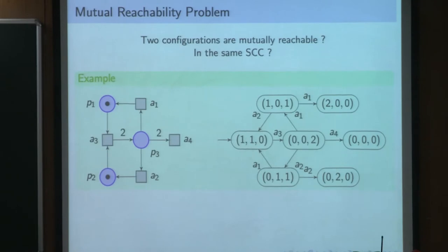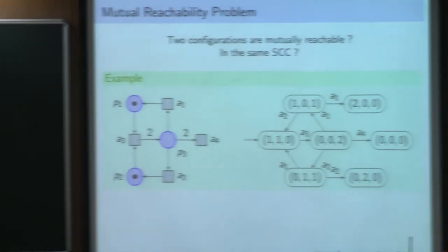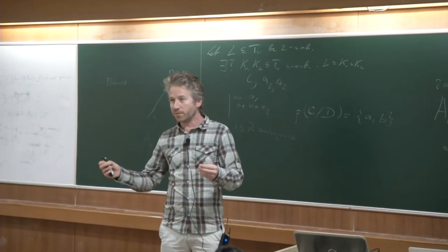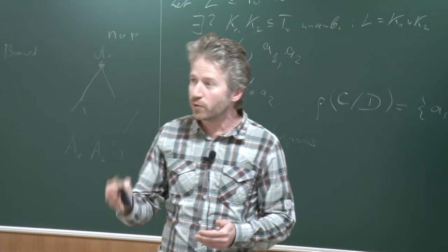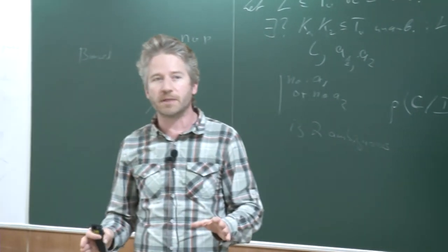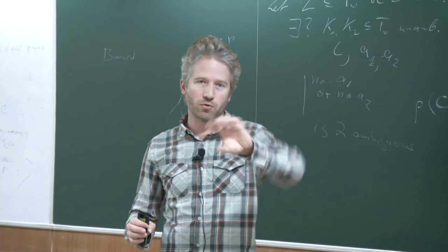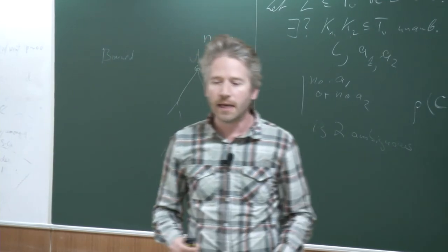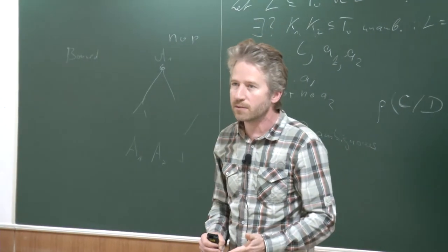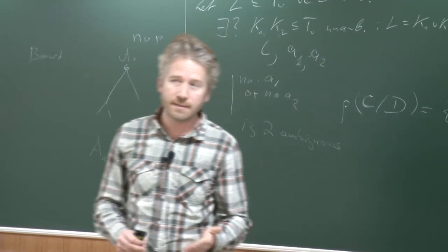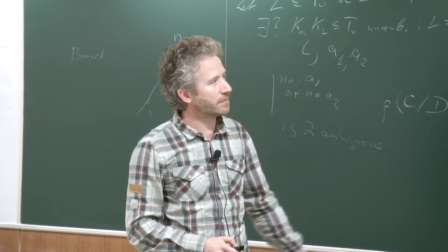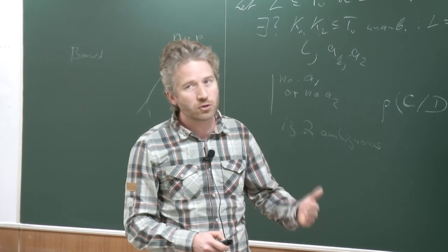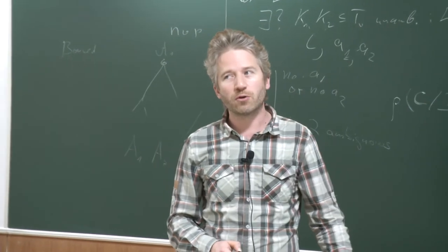The mutual reachability problem: you provide two configurations and the question is, does there exist a way to move from one configuration to the other and come back to the original one? Naturally this problem can be solved with the reachability problem - you provide the two pairs. But if you do that, you will get tower complexity for this problem. In fact, if you do it another way, you can get a better complexity.